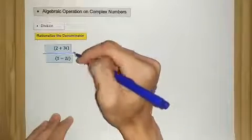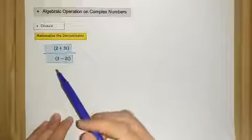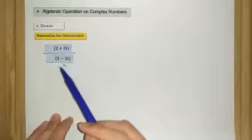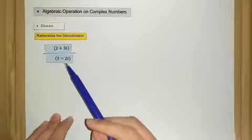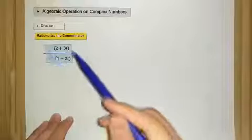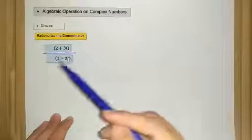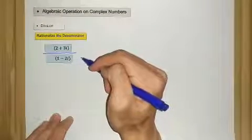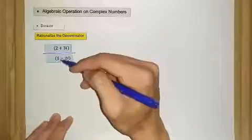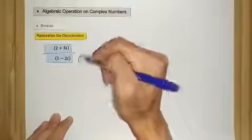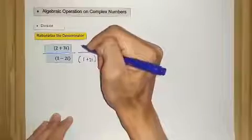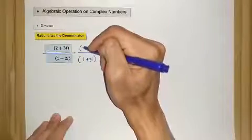To rationalize the denominator means we want to change this complex number in the denominator into a real number, without changing the overall value of the operation. The first step is to identify the complex conjugate of the denominator. We have 1 minus 2i, so its complex conjugate is 1 plus 2i.